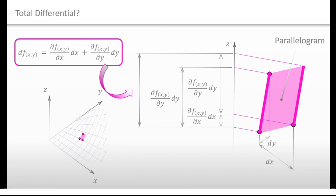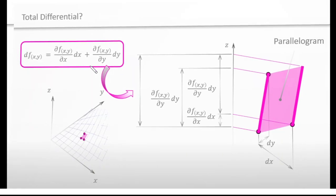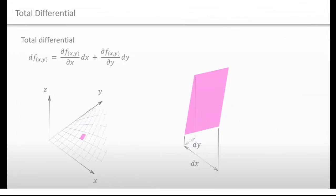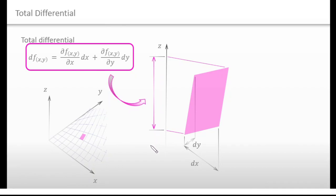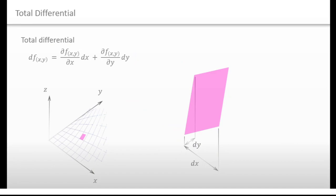Okay, so now let's review what total differential is. This is the approximation of this length. This shape is a parallelogram. And the key point is that dx and dy are independent from each other.